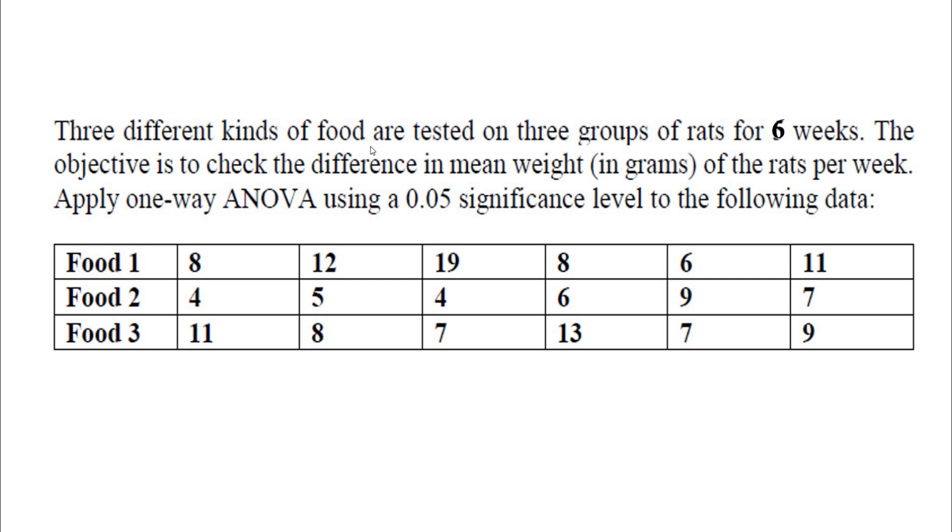Consider three different kinds of food are tested on three groups of rats for six weeks. The objective is to check the difference in mean weight in grams of the rats per week. Apply one-way ANOVA using a 0.05 significance level to the following data. They have been provided three sets of kinds of food here: food 1, food 2, food 3. Testing for six weeks, they have collected the data for six weeks.